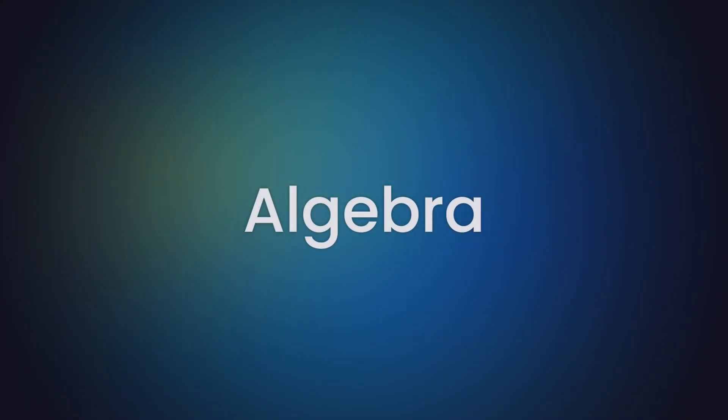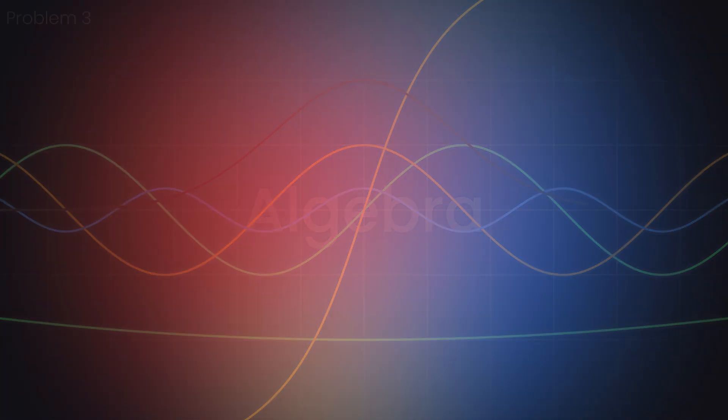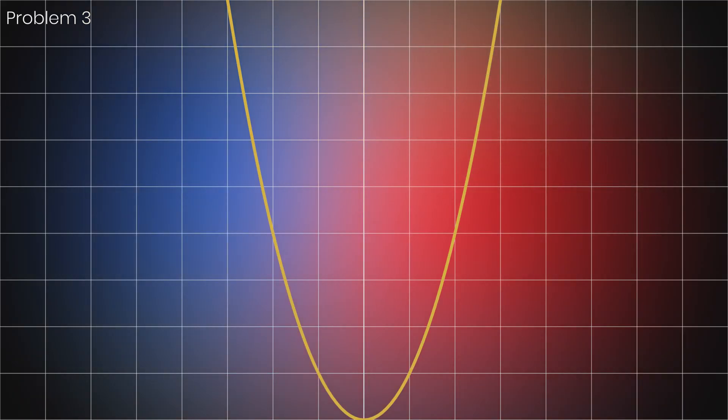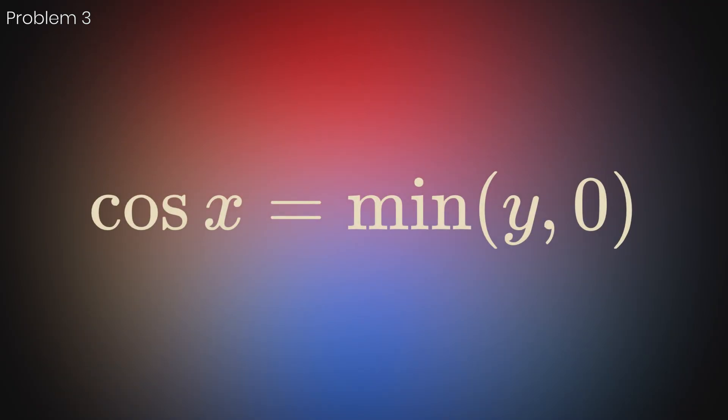Algebra is fundamental to most of math. Problem solving often involves forming and solving equations. Being able to visualize equations gives you an upper hand, especially in this problem. You are given the equation cosine of x equals min of y and 0, and your task is to construct an equation for the new graph after applying a series of transformations.